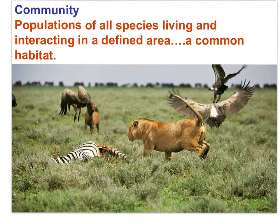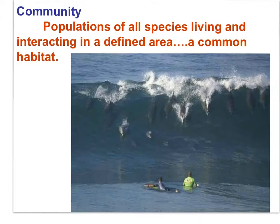And that brings us to community. Populations of all species — different species — living and interacting in a defined area, a common habitat. In this photograph, you can see different species interacting in a common habitat: producers, primary consumers, secondary consumers, scavengers. And don't forget the decomposers. This is a community — populations of all species, different species, living and interacting in a defined area, a common habitat.